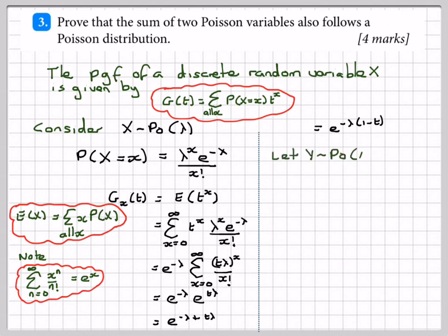Now, let y be Poisson mu, then g_Y(t) will be e to the minus mu times (1 minus t).